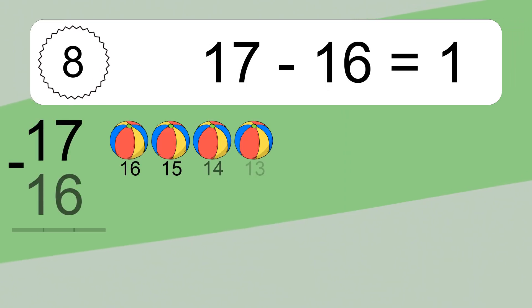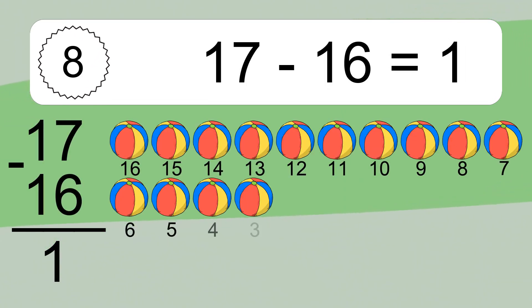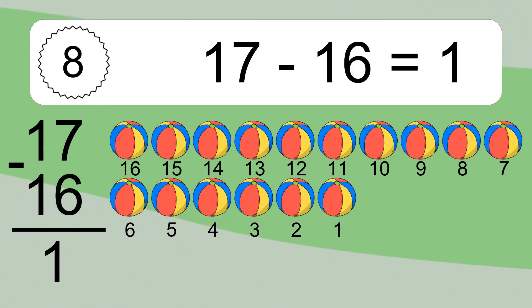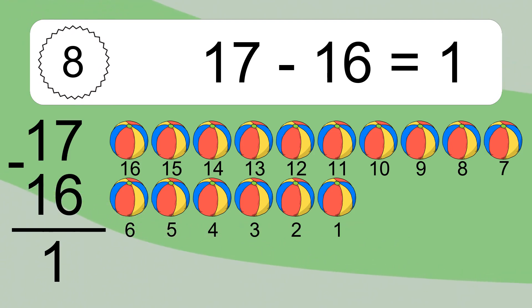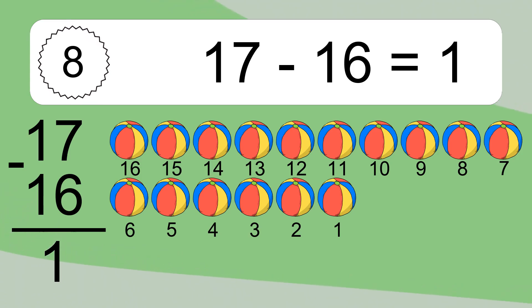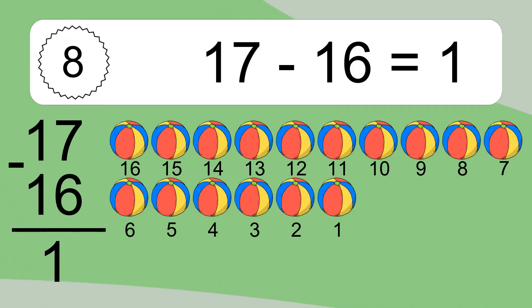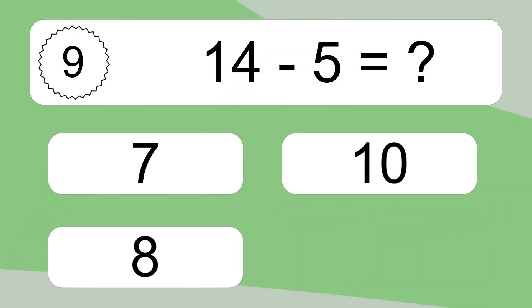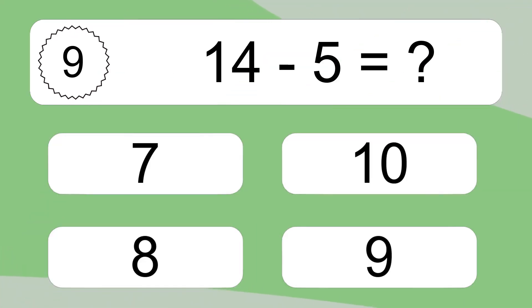17 minus 16 equals 1. Let's count it: 16, 15, 14, 13, 12, 11, 10, 9, 8, 7, 6, 5, 4, 3, 2, 1. 14 minus 5 equals what?